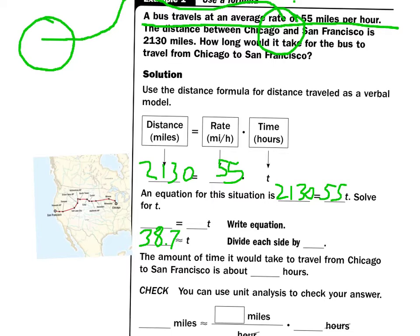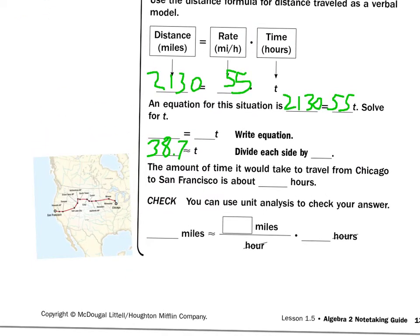Now, if I want to check that, all I have to do is put this all together. So it's 55 miles per hour for 38.7 hours. Remember, when we use the word per, that's divided by. So it's 55 miles per hour. So the hours cancel each other out. I'm left with just miles. And 55 times 38.7 equals 2,130.